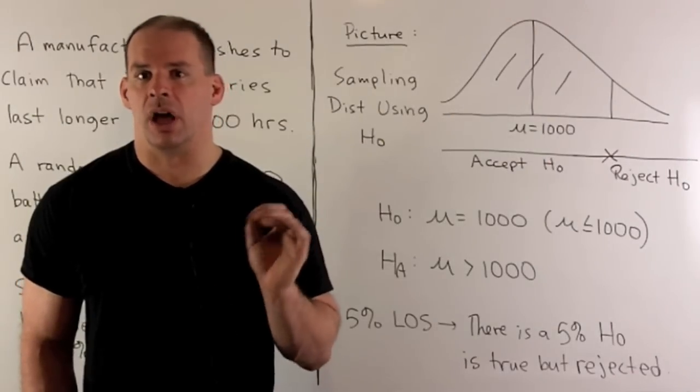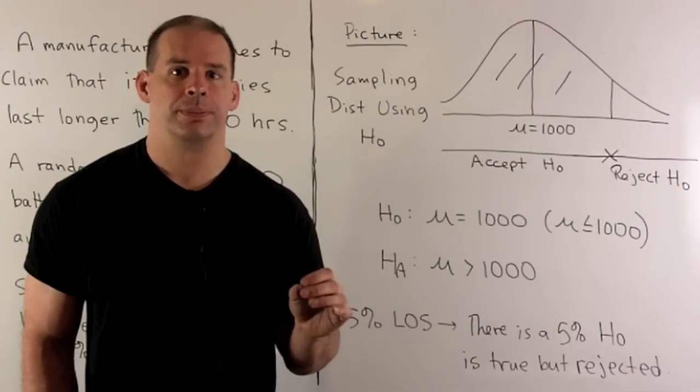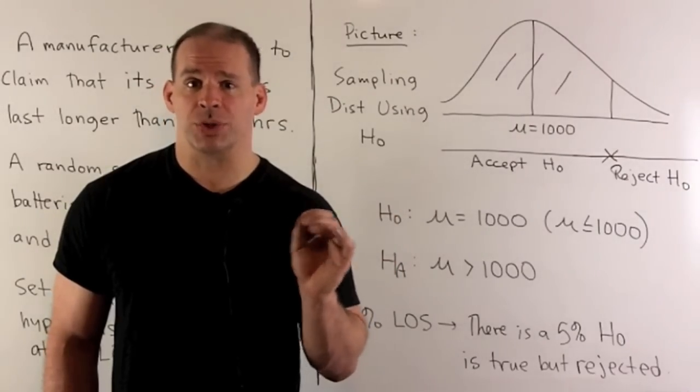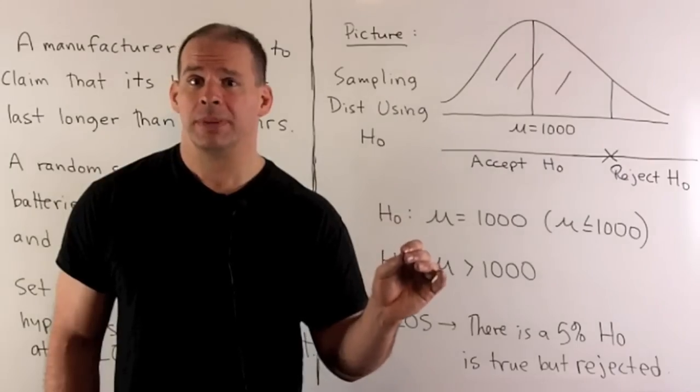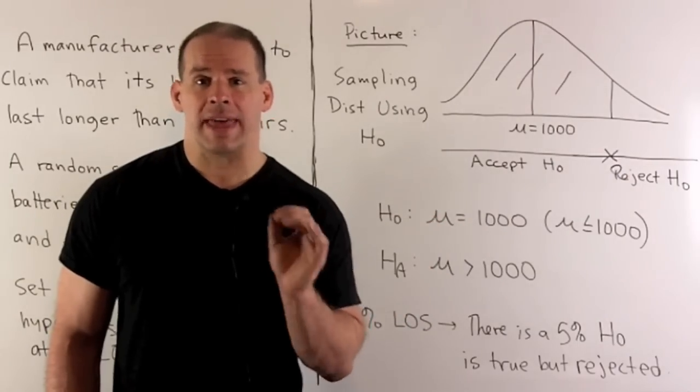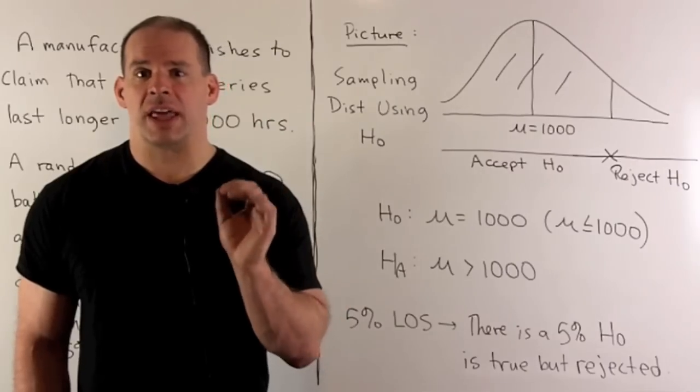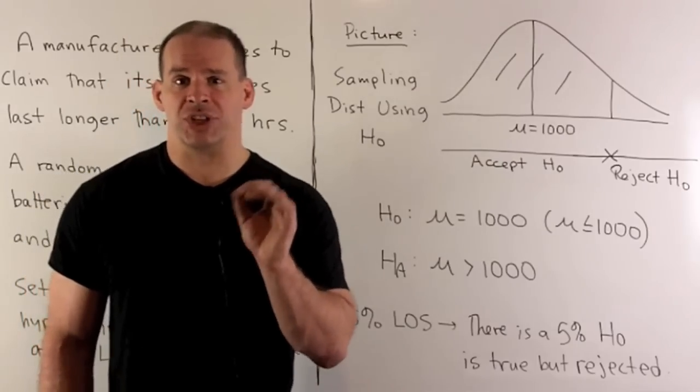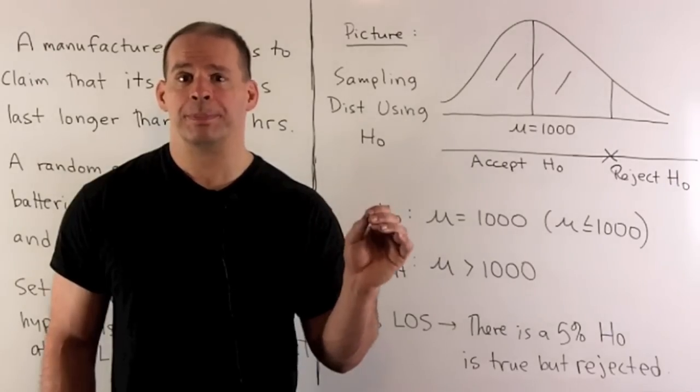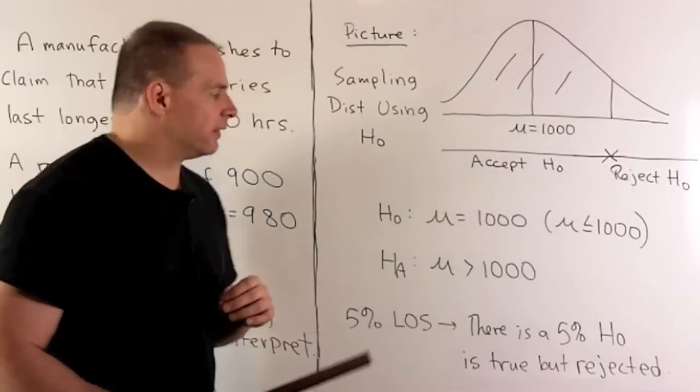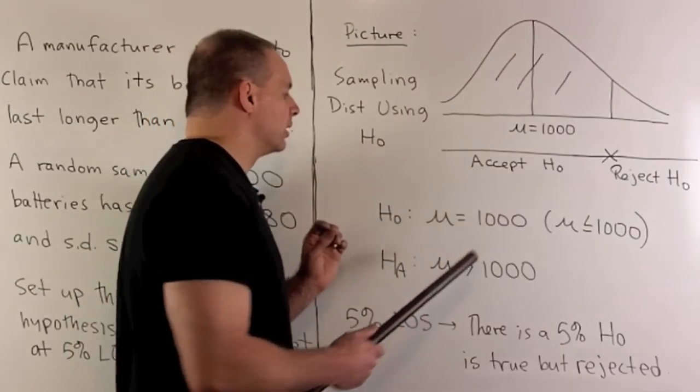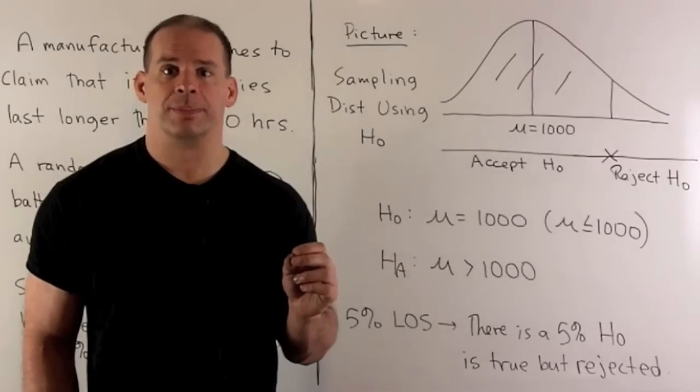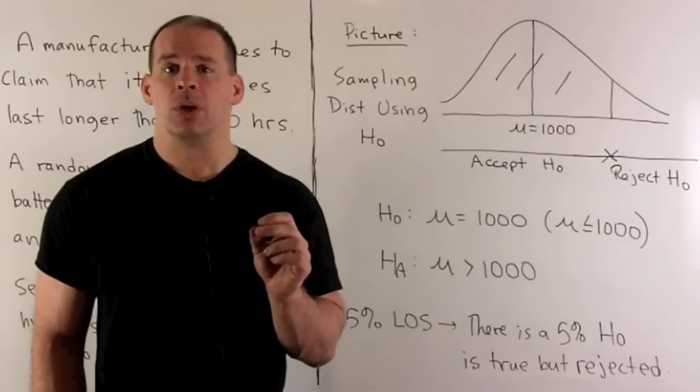The first step is to set up the null hypothesis and the alternative hypothesis. In our case, we need to be careful. The statement of interest includes an inequality. The manufacturer wishes to claim that the unknown population mean mu is greater than 1,000. That means we use a one-tail test. How does that affect the null hypothesis and the alternative hypothesis? For the null hypothesis, that's just going to be our educated guess at the unknown population mean. It's always going to be stated as an equality. So here we'll have H0 as the statement mu equals 1,000.